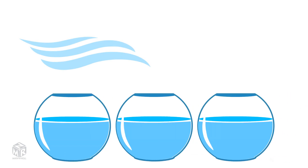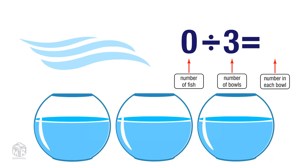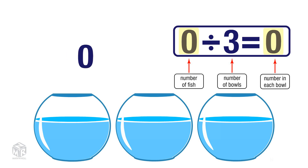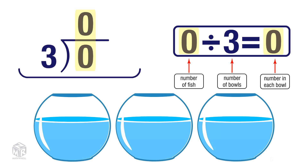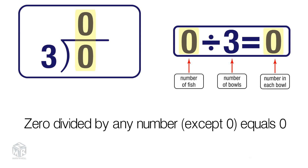Let's say we have zero fish and three bowls. Zero represents the number of fish, and 3 represents the number of bowls. Zero divided by 3 gives us the number of fish in each bowl. We had zero fish and we tried to split them up into three different bowls — because we had zero fish to begin with, we have zero fish in each bowl. So zero divided by 3 equals zero. The third rule states that zero divided by any number, except zero, equals zero.